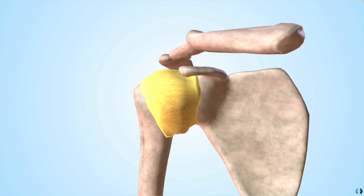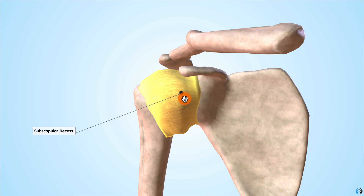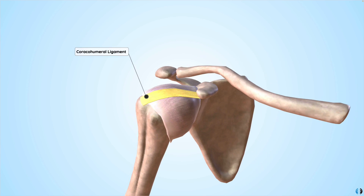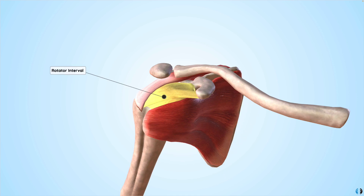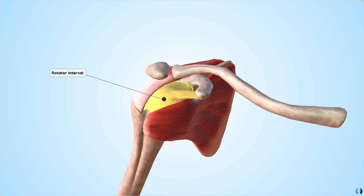The first is the subscapular recess, a specific area of the capsule between the superior and middle aspects of the joint. Next is the coracohumeral ligament, which we can see over the superior shoulder capsule. And the third and final region is the rotator interval.